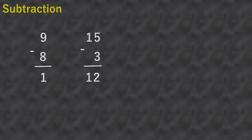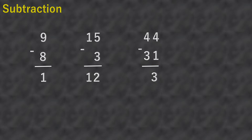Forty-four minus thirty-one. Same as what we've done before — we need to subtract the ones first. Four minus one equals three, and then subtract the tens: four minus three equals one. So forty-four minus thirty-one equals thirteen.